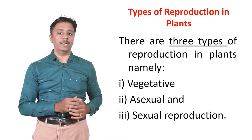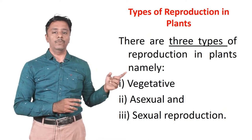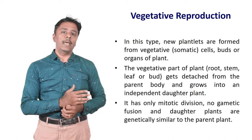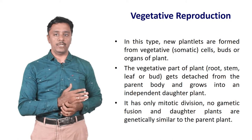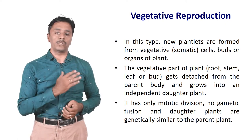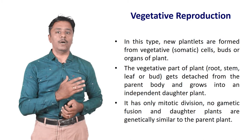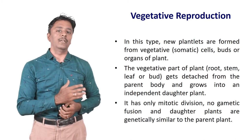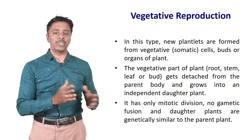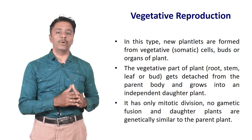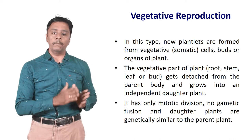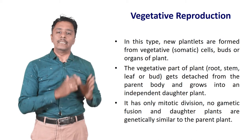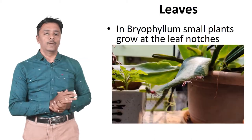There are three types of reproduction in plants, namely vegetative, asexual and sexual reproduction. The first one is vegetative reproduction. In this type of reproduction, new plantlets are formed from vegetative, that is somatic cells, buds or organs of a plant. The vegetative part of the plant — root, stem, leaf or bud — gets detached from the parent body and grows into an independent daughter plant. It has only mitotic division, no gametic fusion, and daughter plants are genetically similar to the parent plant.